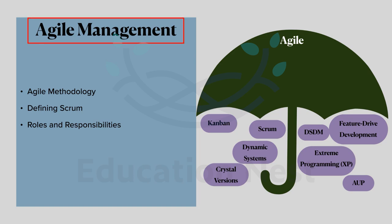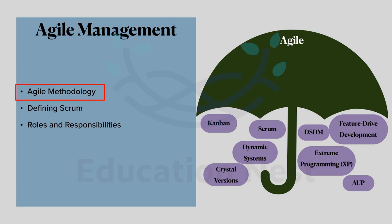Before we move on, let me give a brief history of agile management. Agile management started by targeting the IT sector — software developers and project management within IT. But now it is slowly being accepted by many other industries such as manufacturing, production, and automobile. These industries are accepting agile management because the approach is quite flexible and delivers much better results.